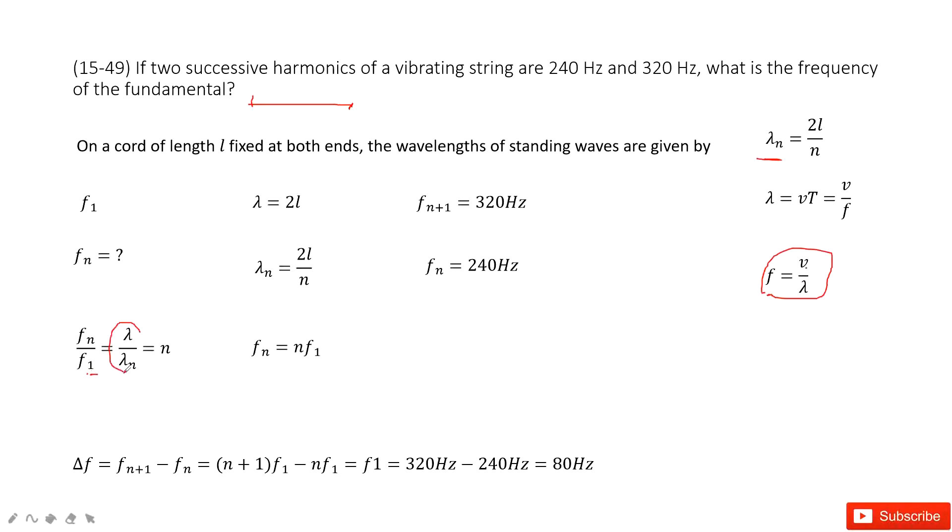Now from this function, what can you get? You can say lambda 1 over lambda n. Lambda n is 2L over n. Lambda 1 is just 2L, right? So this is n. So now we can get this function. We find fn equals n times f1. And then, lambda 1 is 2L, lambda n is 2L divided by n. So input these two inside, we get this ratio.